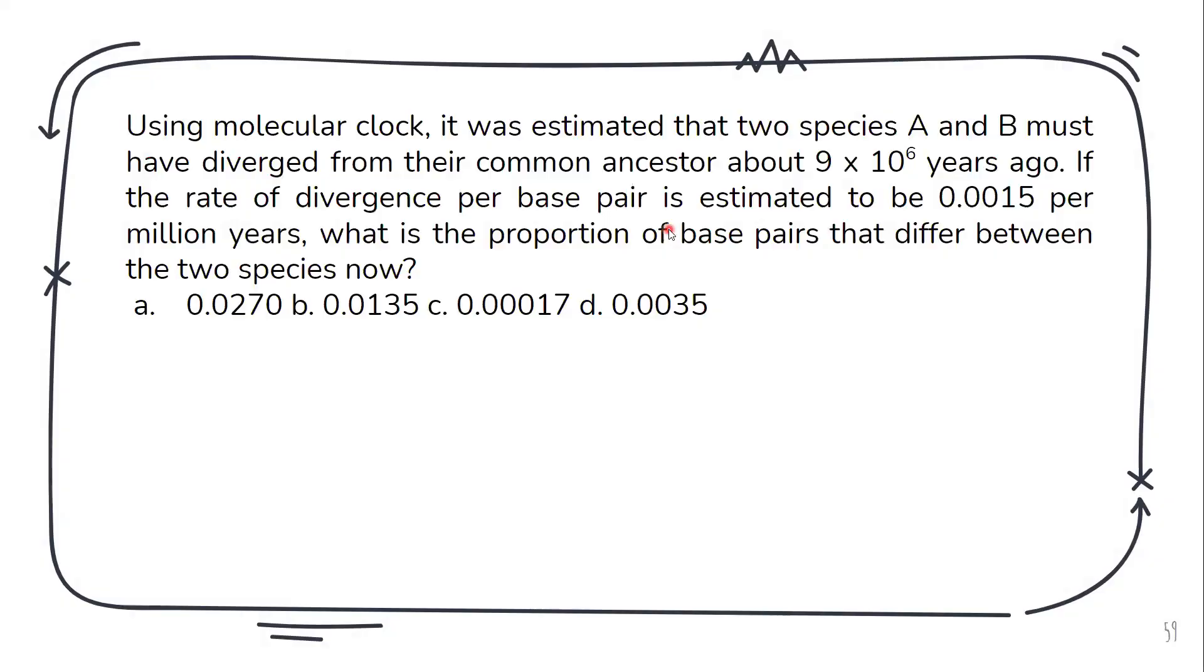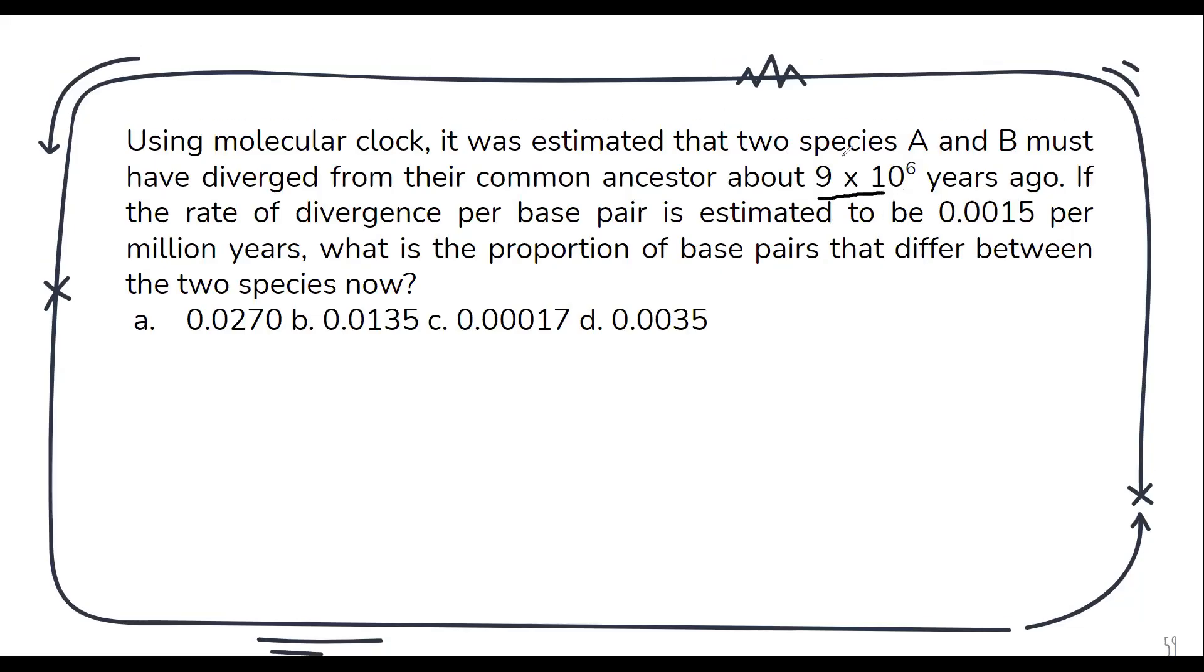We can understand this through an example. So this was a question asked in CSIR net. Now the question says that the two species A and B diverge from a common ancestor about 9 into 10 raised to 6 years ago. So what would this 9 into 10 raised to 6 years be? Definitely it is the time that it has taken. So it is t.